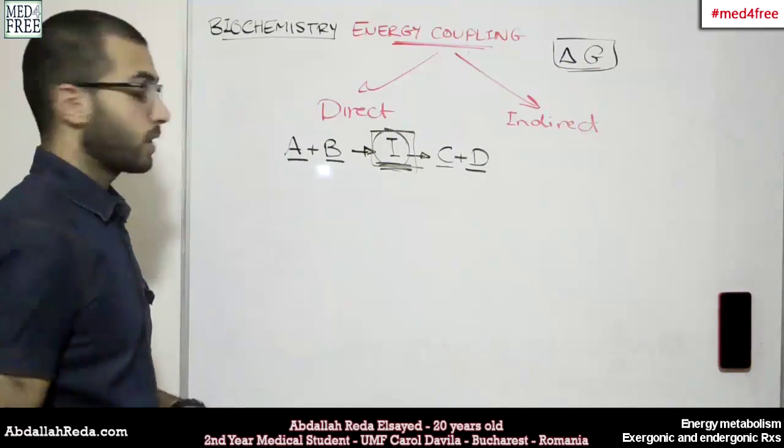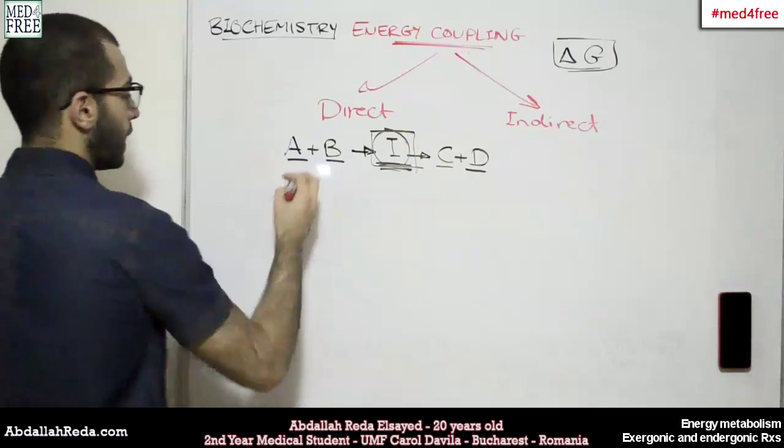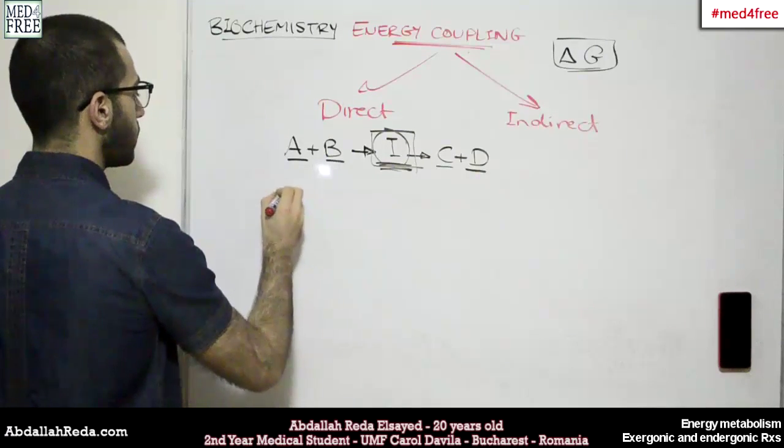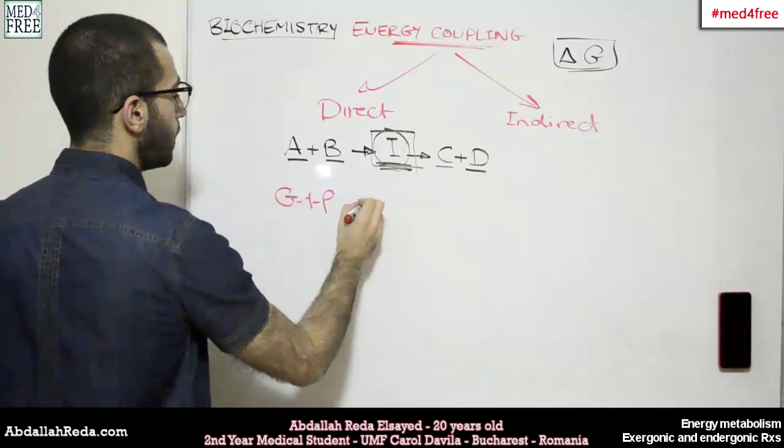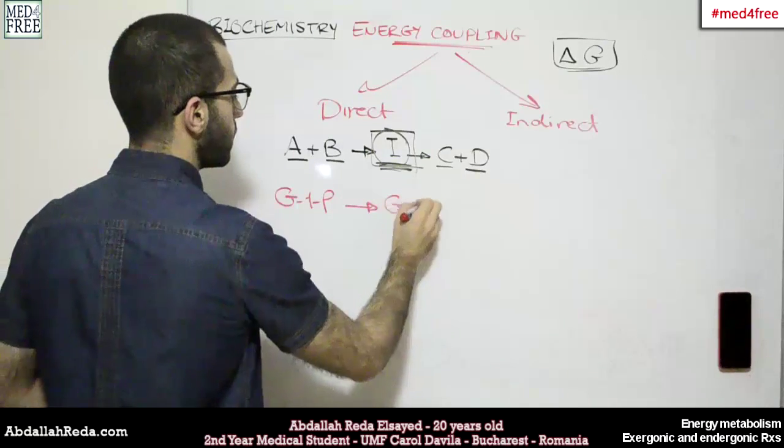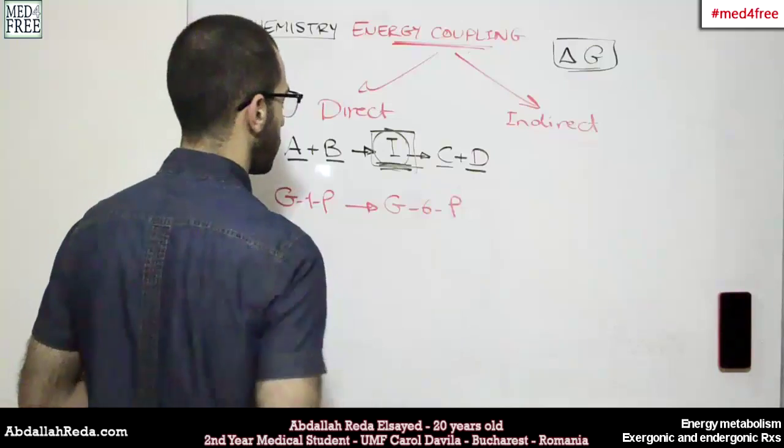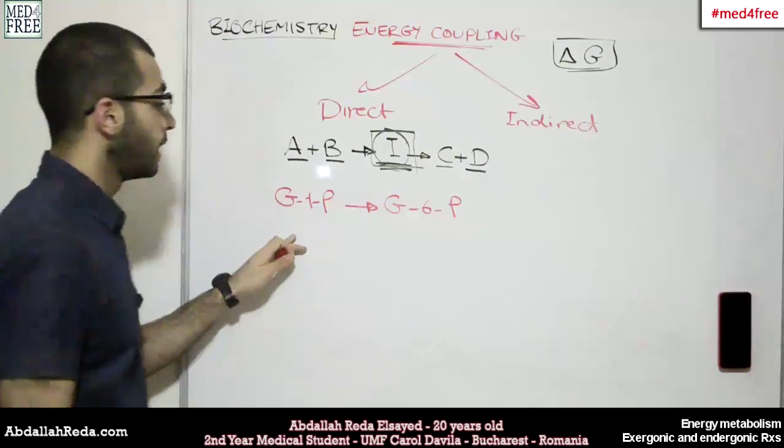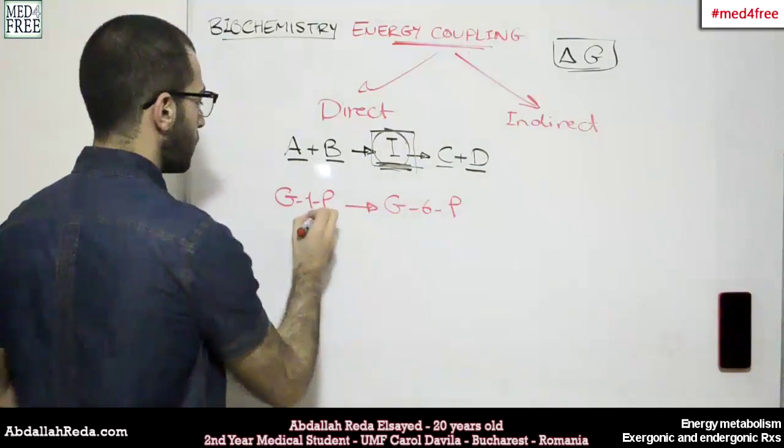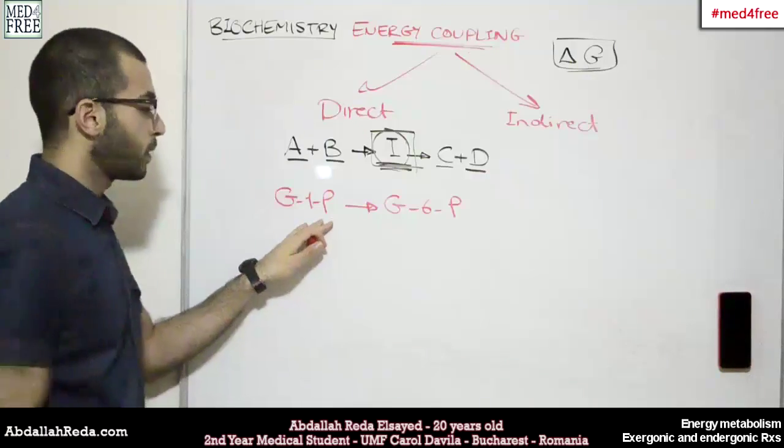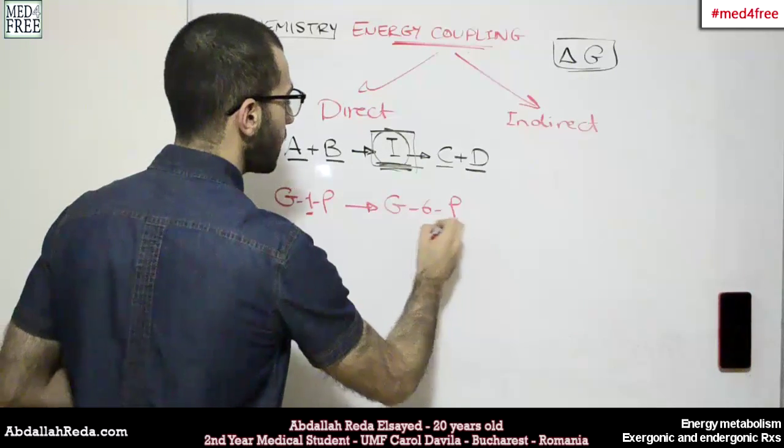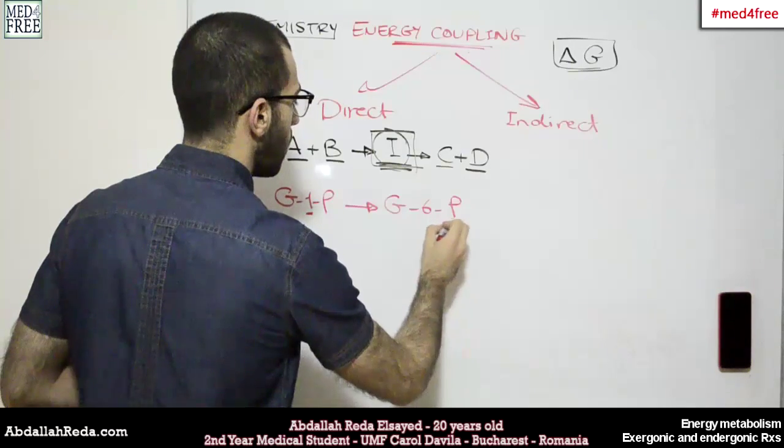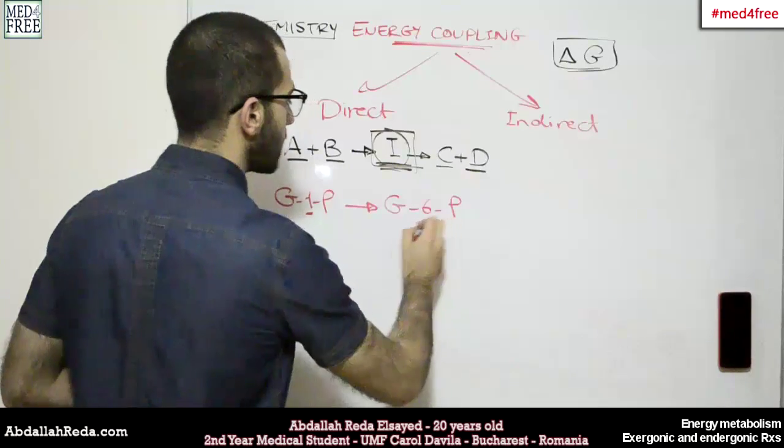An example for such reactions would be like the transformation of glucose 1-phosphate into glucose 6-phosphate. So glucose is a 6-carbon chain. And here in this structure we have a phosphate group bound to the first carbon, and then it becomes bound to the 6th carbon.